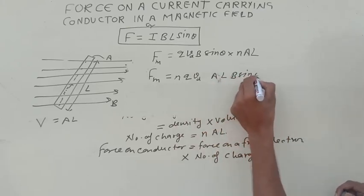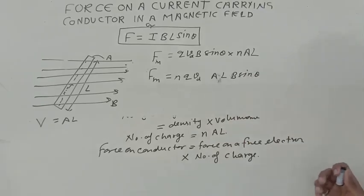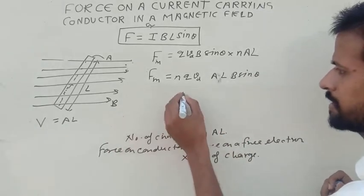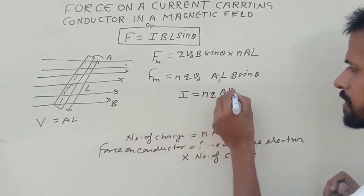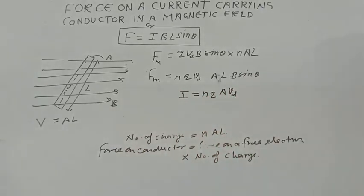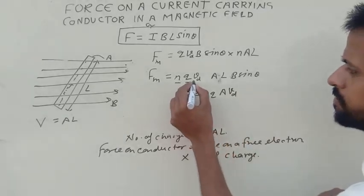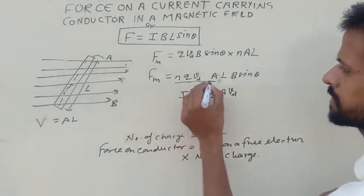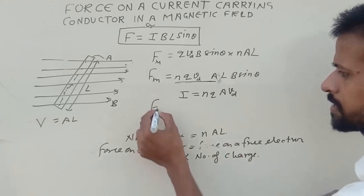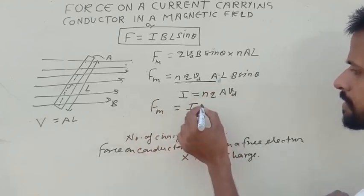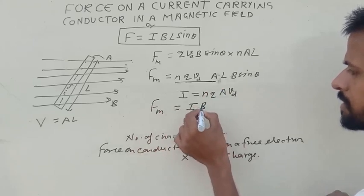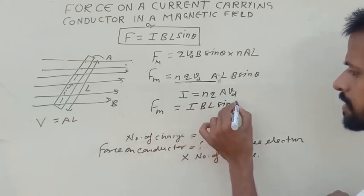Now we know that I equals N Q A VD. So for N Q A VD we write I, so the magnetic force is I B L sin theta.